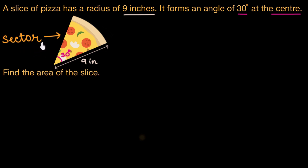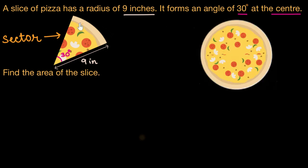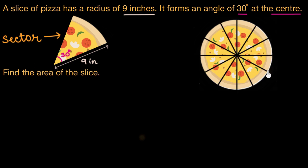We already know what a sector of a circle is, but just as a refresher, let me bring the big circular pizza here. This slice of pizza is actually a part of this circular pizza. If I divide this pizza into slices, then each of the slices is a sector of this pizza. The radius of the slice means the radius of this circle — 9 inches — and this sector makes an angle of 30 degrees at the center. Now we need to figure out the area of this sector.